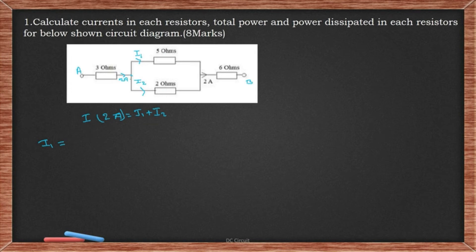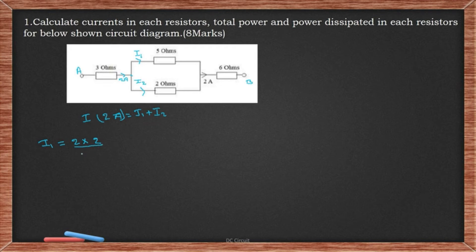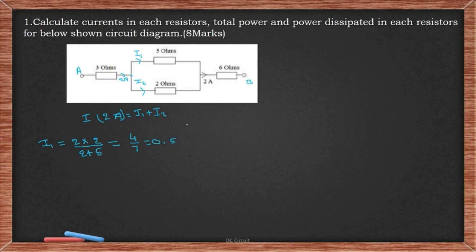Since the 5 ohm and 2 ohm are in parallel, we use the current divider formula. I1 = 2 × 2/(2 + 5) = 4/7 = 0.572 A.